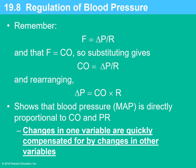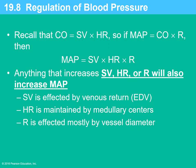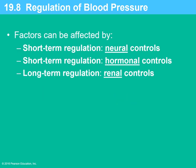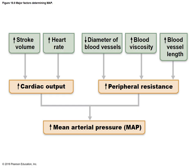If you change one of these variables, you'll have compensation or changes with the other variables. If something increases, the others compensate for that increase, and vice versa. Anything that increases stroke volume, heart rate, or resistance will also increase mean arterial pressure. These can be affected by neural controls, hormonal controls, and renal controls, which affect short-term versus long-term regulation.